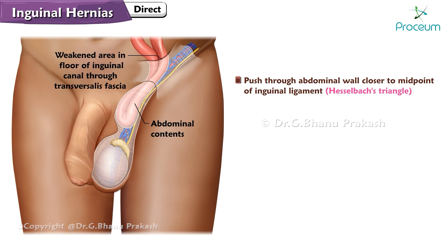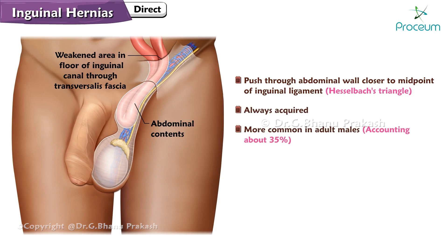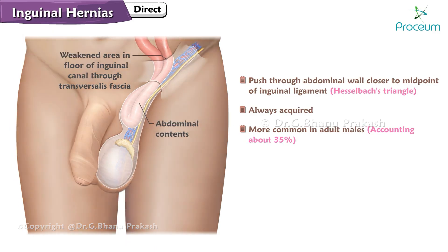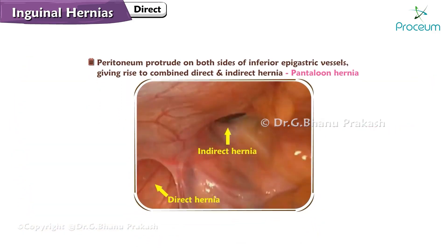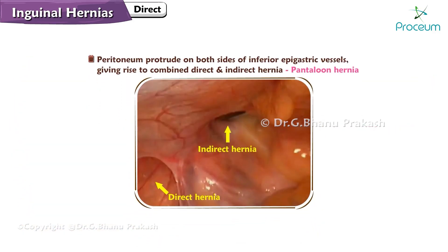Direct inguinal hernias are always acquired and are more common in adult males, accounting for about 35% of inguinal hernias in this group. The peritoneum may protrude on both sides of the inferior epigastric vessels, giving rise to a combined direct and indirect hernia called a pantaloon hernia.